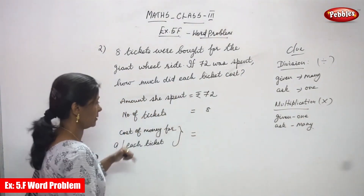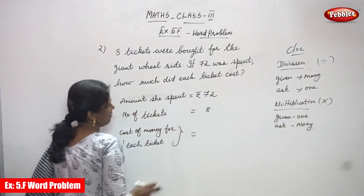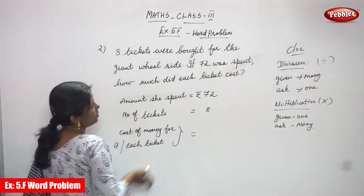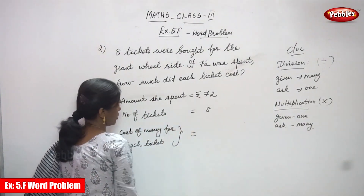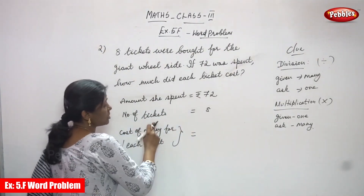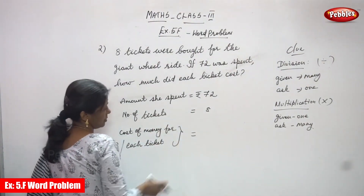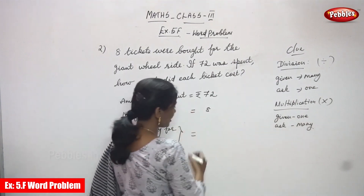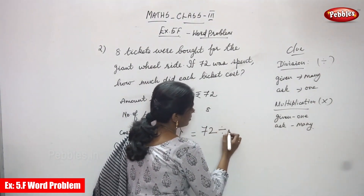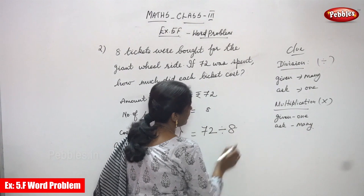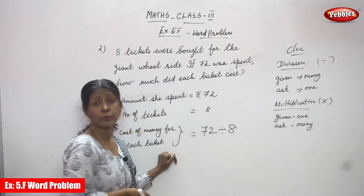Amount she spent for 8 tickets is 72 rupees, because they went for a giant wheel ride. Number of tickets she bought is 8 and cost of money for each ticket we have to find out. You know that very well — it is a division. So 72 divided by 8.